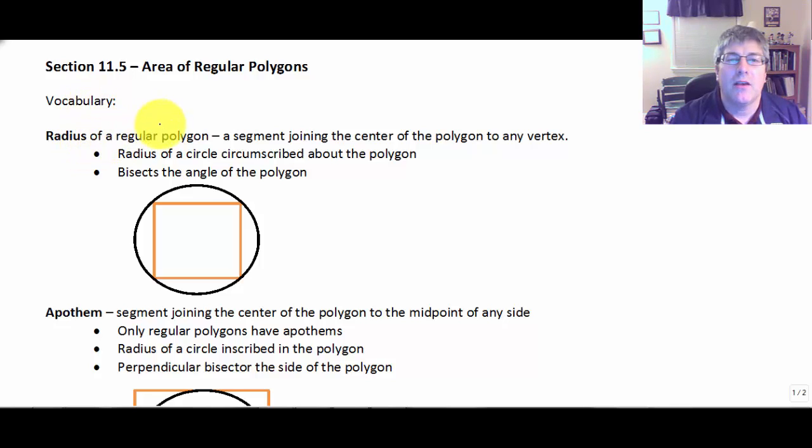The radius of a regular polygon is the segment joining the center of the polygon to any vertex. So if I draw a segment straight to the vertex from the center of the circle, that is going to be a radius.